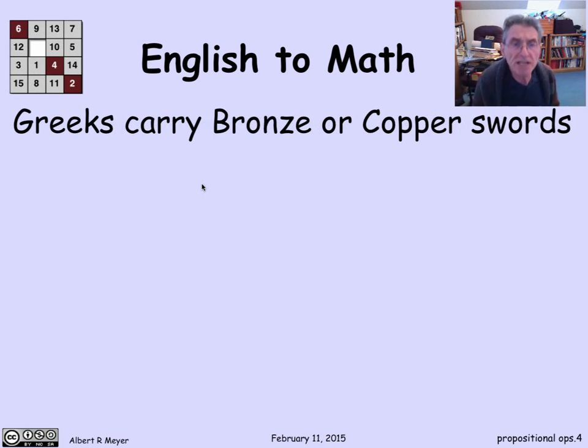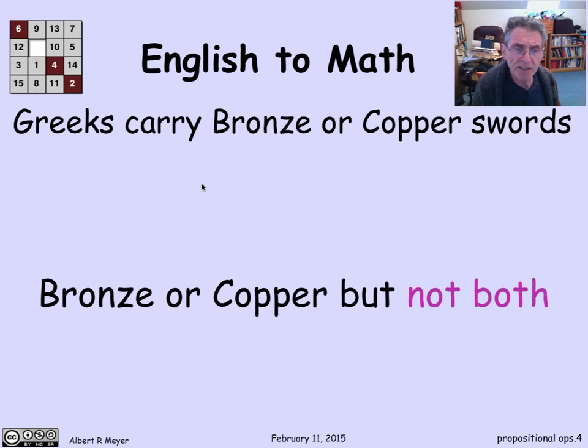Let's look at another example. Greeks carry bronze or copper swords. Syntactically, this has the same structure as the previous phrase, but we're going to translate it differently. The reason is that we mean here that a Greek soldier is not going to carry both a bronze and a copper sword. Bronze swords are just way better than copper swords. They'll slice right through copper. They're much harder.